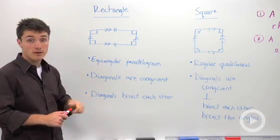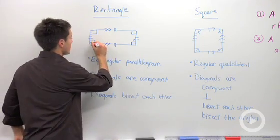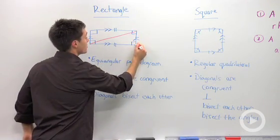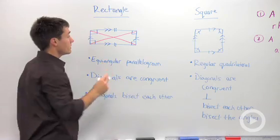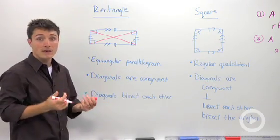The diagonals of a rectangle are congruent to each other, which is a trick that people use in construction if they're trying to build a rectangular room. The diagonals will bisect each other.